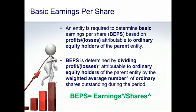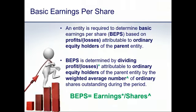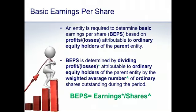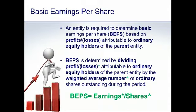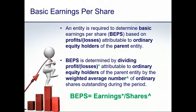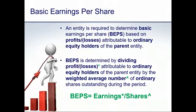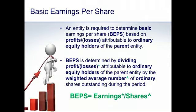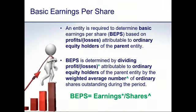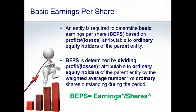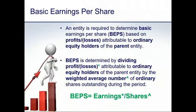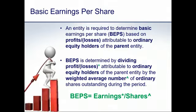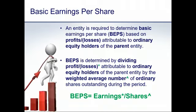Turning to basic earnings per share — an entity is required to determine its basic EPS based on the profits attributable to the ordinary equity holders of the parent entity. Most listed entities are made up of many group subsidiaries, not all of which are necessarily owned 100%, meaning there's often participation in profits by non-controlling shareholders. There might also be equity holders at the parent level who are not holders of ordinary shares but of other instruments qualifying as equity.